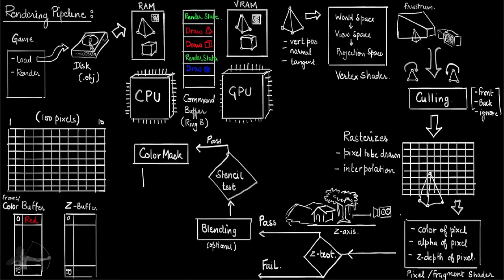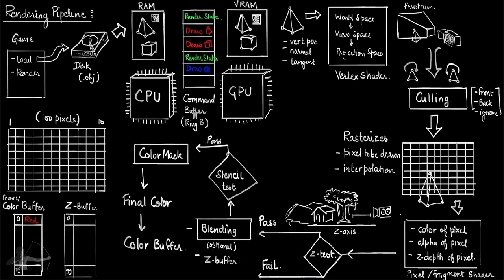After color masking we have the final color of the pixel to be drawn on the screen, and that final color goes to the color buffer which is then drawn on the screen. During this workflow, after the z-test passes, the z-buffer is also written. For example if you are rendering a tree and a red pixel on the tree is rendered at the 75th pixel, then in the z-buffer at the 75th spot that z-value will be written.